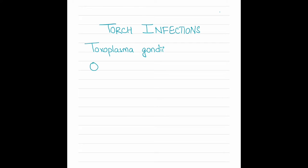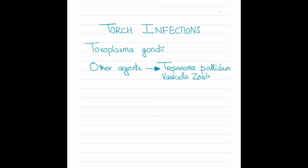Now let's talk about the group of infectious agents. The first one is Toxoplasma gondii. Then the other agents are Treponema pallidum, which causes syphilis. Then we have Varicella zoster virus. Then we have Parvovirus B19. And then we have HIV, human immunodeficiency virus, which causes AIDS. So these are the other agents.